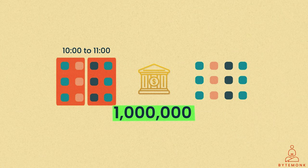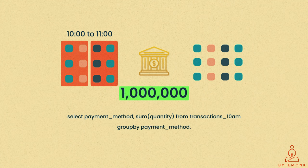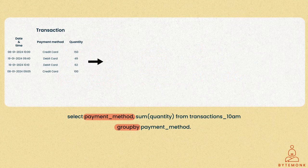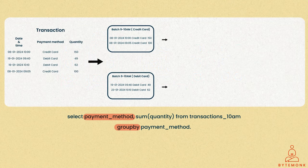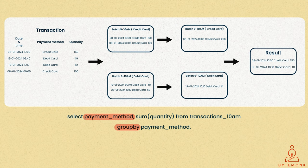So, now if you need to calculate the sum for each payment method, your query might look like this. Notice that here we utilize the GROUP BY clause to compute the sum for each payment method separately. What if we calculate the sum for all payment methods simultaneously? In fact, we will create one batch for each payment method per hour, compute the sum for each batch in parallel, and combine the results in the end.